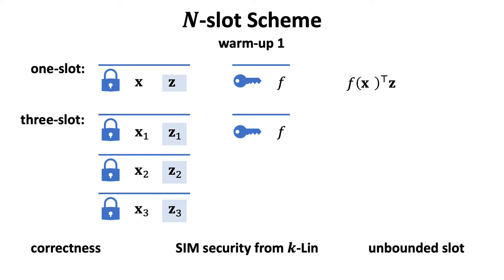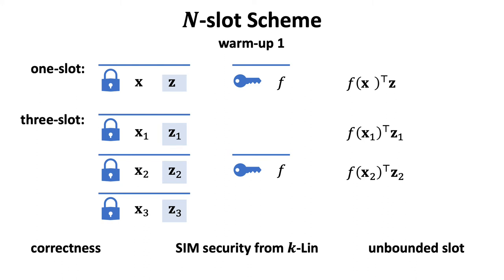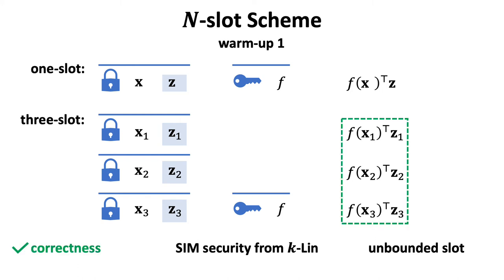A naive bootstrapping works like this. We encrypt xi and zi in each slot using the one-slot encryption algorithm, and the secret key is exactly the same as the one-slot secret key. Namely, the ciphertext for the three-slot case consists of three sub-ciphertexts. The sub-ciphertext i corresponds to slot i. Using the secret key to decrypt sub-ciphertext i, we get a partial decryption result for slot i, according to the correctness of the basic one-slot scheme. Adding up all partial decryption results for all three slots gives us the attribute weighted sum, and the scheme indeed satisfies correctness.